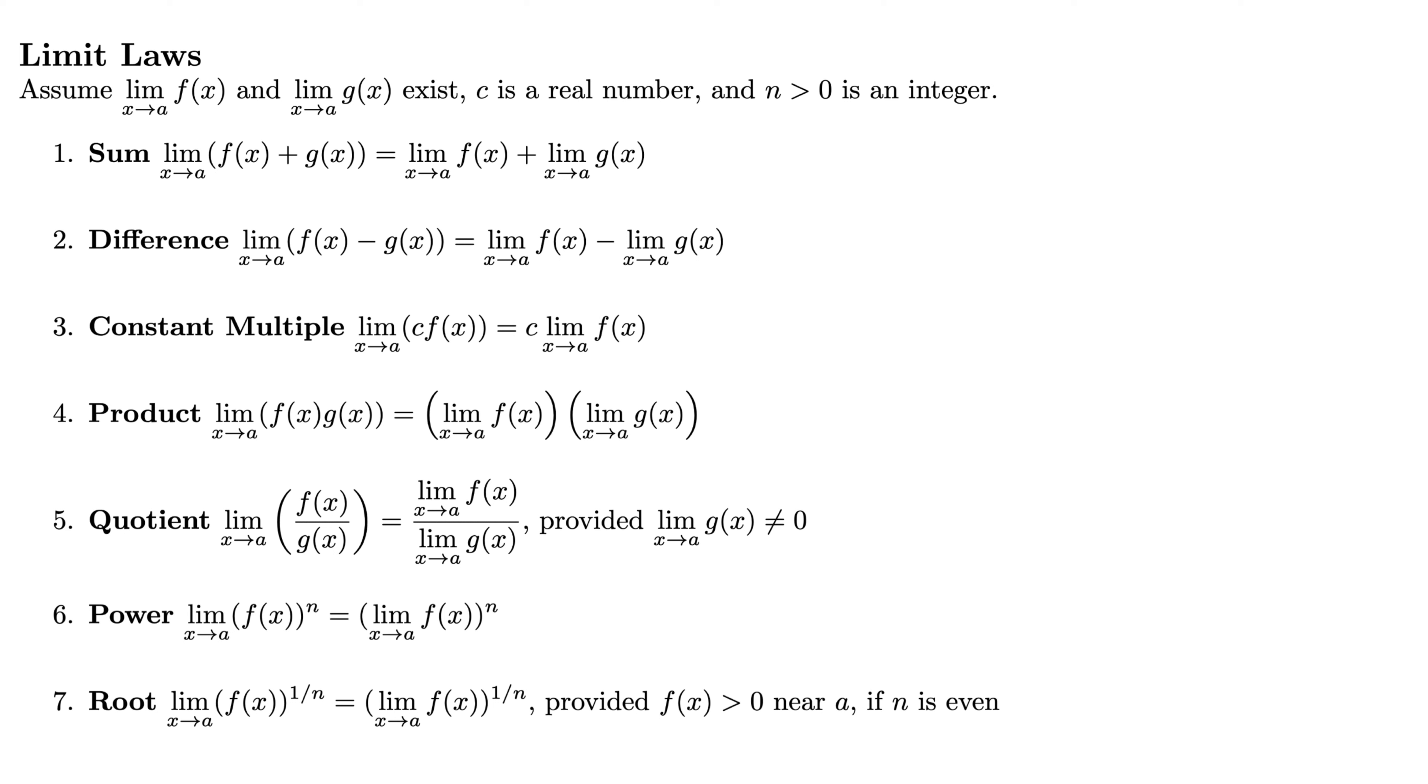Those are two things we'd really expect limits to have, and we should be very thankful that they have them, because they make the limit much nicer to work with than if this wasn't true, if it didn't have this additive property. Same thing with number three, the constant multiple, which says that if you have the limit as x goes to a of c times f(x), that's the same as c times the limit as x goes to a of f(x). So essentially the constant comes out of the limit and goes to the front.